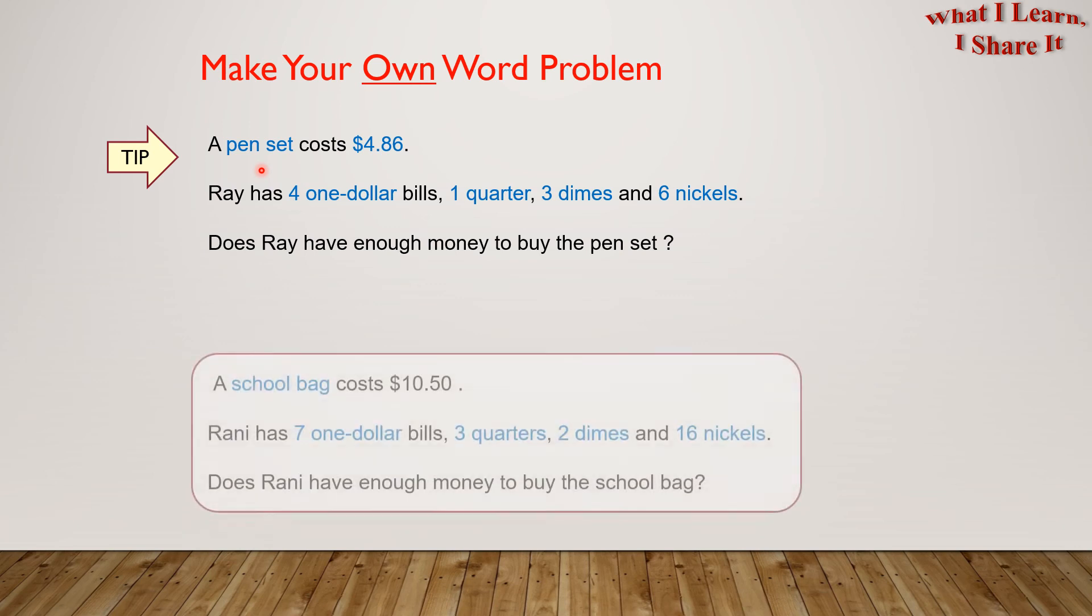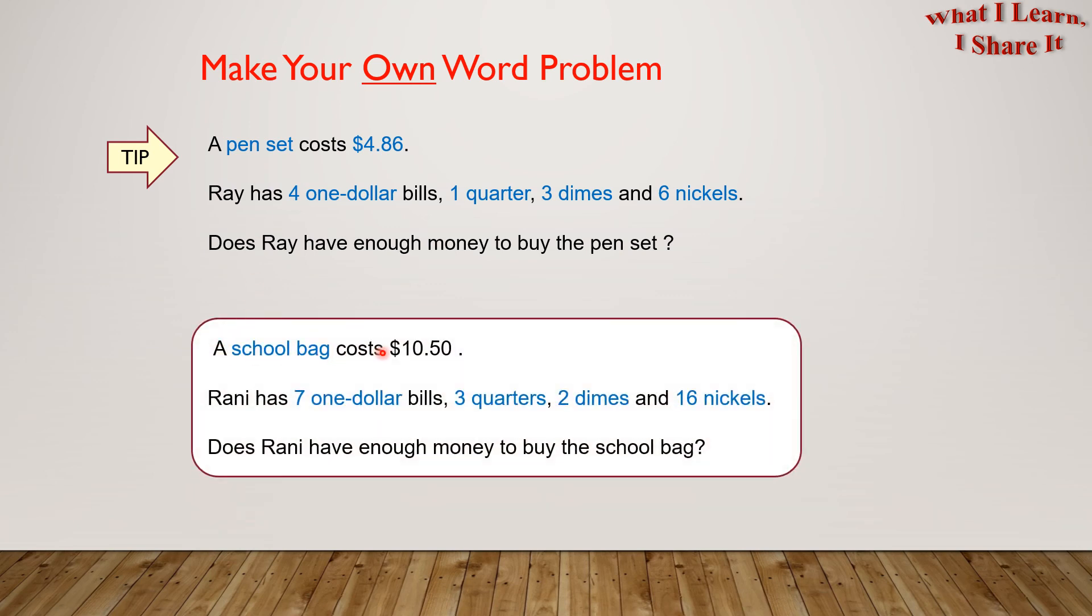Here's an example. A school bag costs $10.50. Ronnie has seven $1 bills, three quarters, two dimes, and 16 nickels. Does Ronnie have enough money to buy the school bag? In this way, you can make so many of your own word problems.